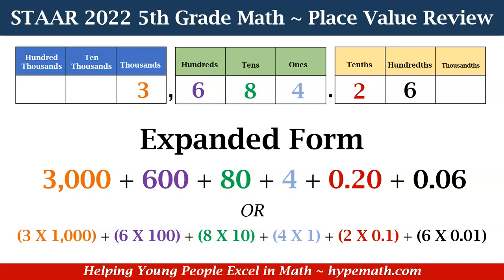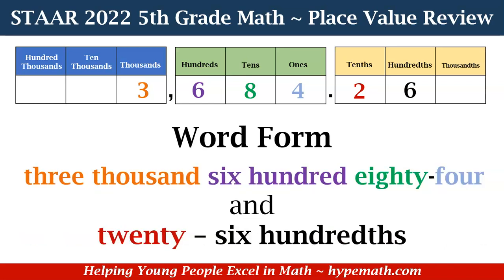That was quite a mouthful! Let's look at how we can write this number in word form. When we hear 'word form,' we know that it is all words. We have three thousand, six hundred, eighty-four and 26 hundredths. Remember, whenever we are saying our decimal, whatever place value that last number is in, that is the value that we say.